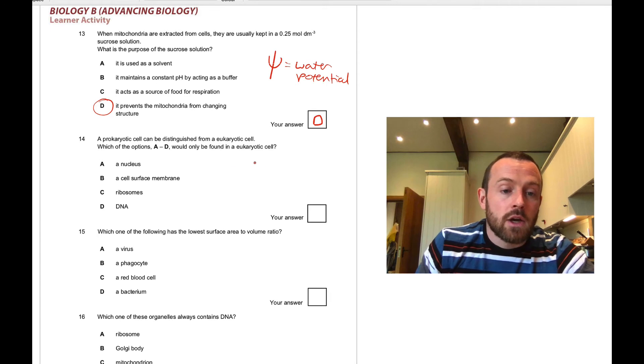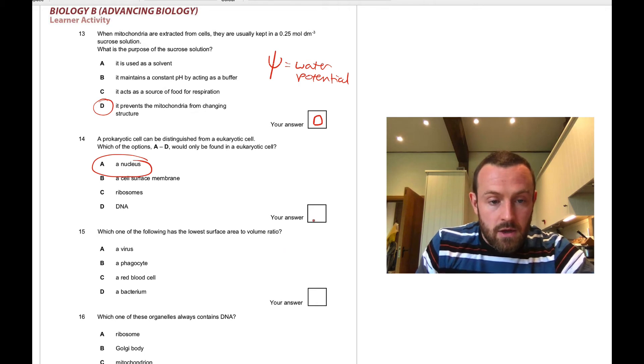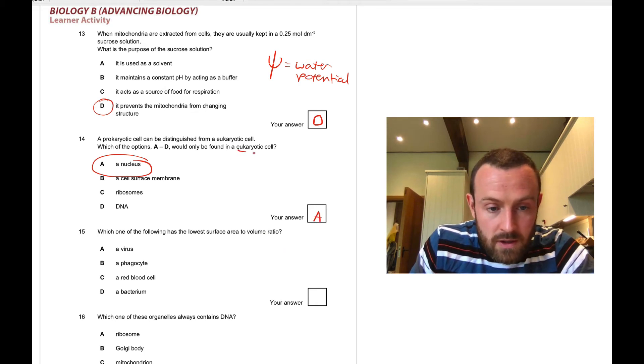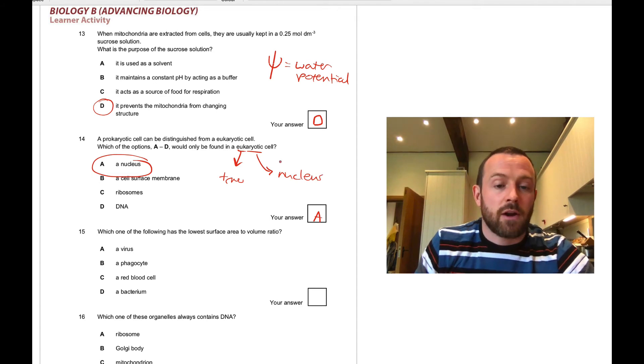Question fourteen: what would be found only in a eukaryotic cell? That is a nucleus. It's only found in a eukaryotic cell. Remember, eukaryo, if you take that word apart, eukaryo actually means true in Greek, I think, and karyo means nucleus. So they have a true nucleus. That's what the word eukaryotic means.